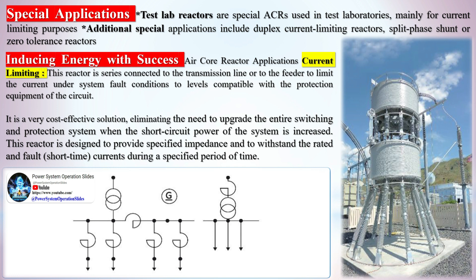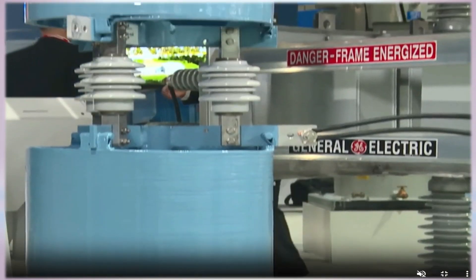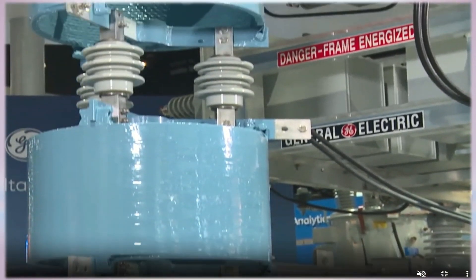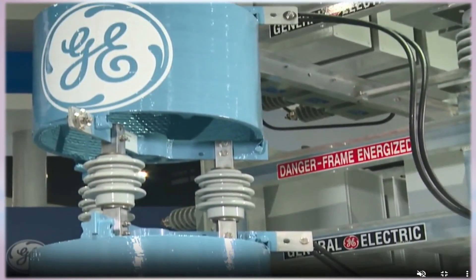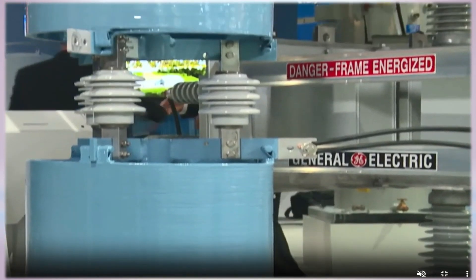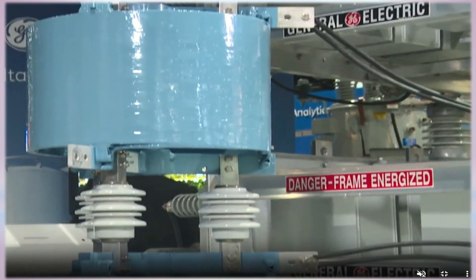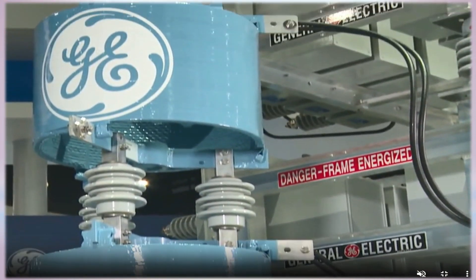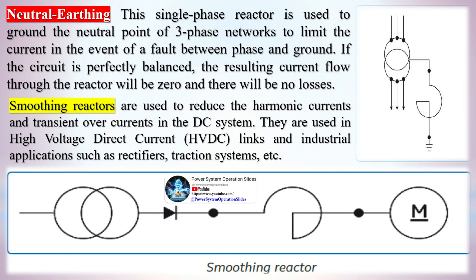Current limiting in detail: this reactor is series connected to the transmission line or feeder to limit the current under system fault conditions to levels compatible with the protection equipment of the circuit. It is a very cost-effective solution, eliminating the need to upgrade the entire switching and protection system when the short-circuit power of the system is increased. The reactor is designed to provide specified impedance and to withstand the rated and fault short-time currents during a specified period of time.